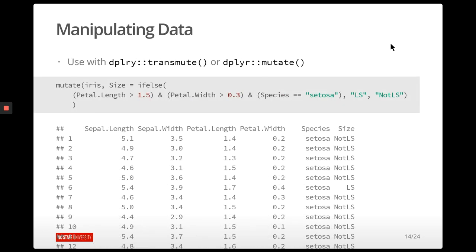We can put this ifelse logic into the dplyr framework using either transmute or mutate. Here we mutate the iris data frame to add a new variable called size, putting the ifelse code inside the mutate call. One nice thing about using ifelse within mutate is we don't have to put iris dollar sign before each variable name, saving typing. We now get a new column added to the data set with the appropriate values.